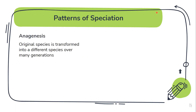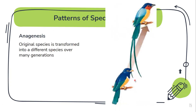First up is anagenesis. In anagenesis, the original species is transformed into a different species altogether over many generations. For example, look at this bird here — it is an ancestor of this bird, so this new species has been derived from the original species over many generations.